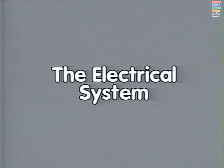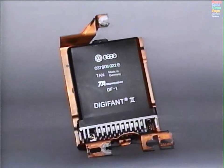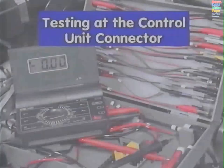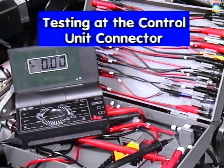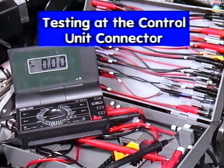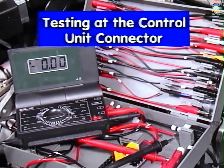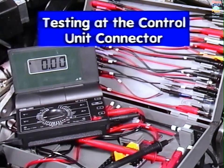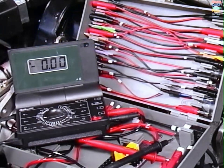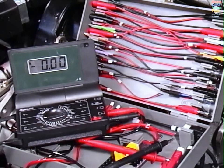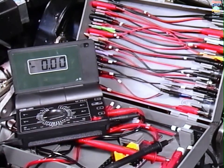The electrical system. The heart and brain of the Digifant system is, of course, the control unit. It uses the well-tried memory map system and selects any one of 256 possible reference points to suit current driving conditions. Testing at the control unit connector. Carry out all the tests using measuring cables from VAG 1594 and multimeter VAG 1526, which is designed to go with the cable set. If the desired value is not achieved at any stage, repair it or replace the component before going any further with the testing.